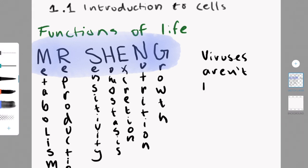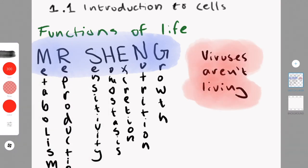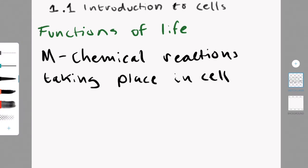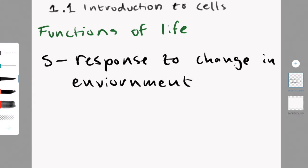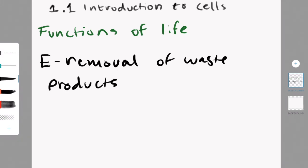M, metabolism, R, reproduction, so on and so forth. The reason why I wrote viruses aren't living is because they don't actually carry out the functions of life. Specifically, they cannot reproduce on their own. Metabolism is the chemical reactions taking place in the cell, essentially converting energy. Sensitivity refers to the cell being able to respond to a change in the environment. Homeostasis is the ability to maintain a stable inner environment. Excretion is the removal of waste products and excess water. I will not be explaining the other ones because they are self-explanatory.